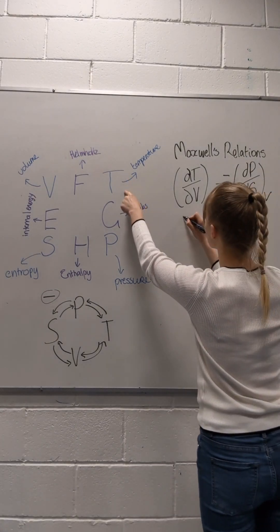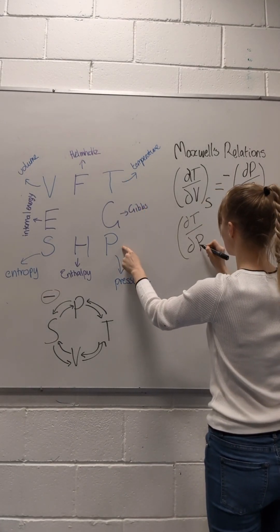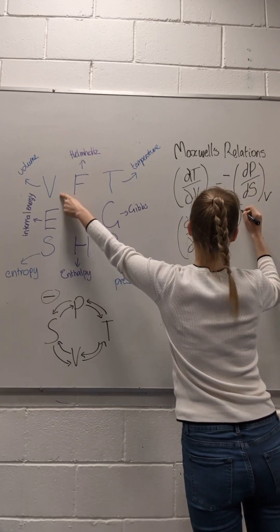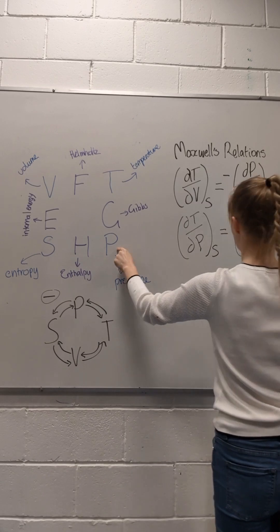Let's do another one. We're going to grab dT again, but this time we're going to go the other direction: dP at constant S. The last variable we didn't mention was V, so it's dV/dS at constant P, again going the other direction.